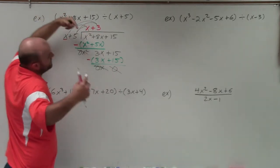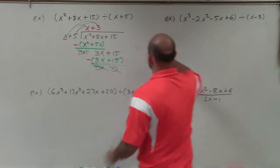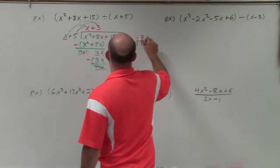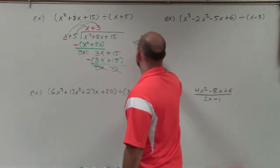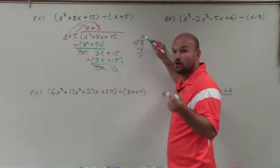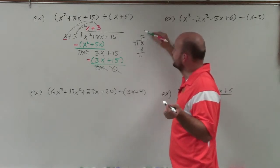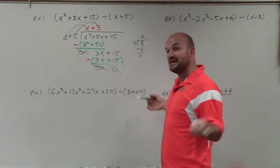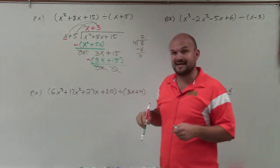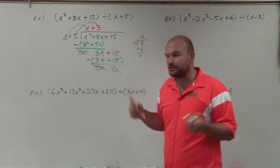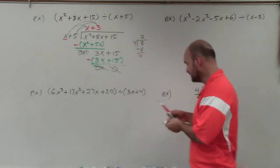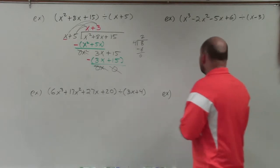If you think about a division problem — for instance, 4 divides into 8 two times, and you can rewrite that as 2 times 4 equals 8 — similarly, what this is saying is x plus 3 times x plus 5 equals x squared plus 8x plus 15. You can always verify your answer by multiplying to make sure you get back your dividend. So let's get on to the next problem.